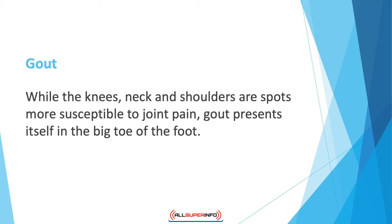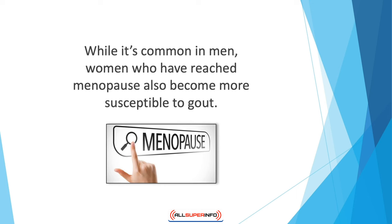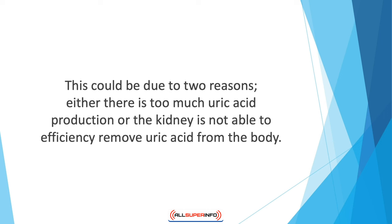Arthritis may also affect other parts of the body as it progresses, so specialists like dentists and ophthalmologists may also be needed. Gout presents itself in the big toe of the foot. It's a very common type of arthritis that causes stiffness, excessive swelling, and intense pain. While it's common in men, women who have reached menopause also become more susceptible. Gout is caused by the deposition of uric acid in the bloodstream — either from too much uric acid production or the kidneys failing to remove it efficiently.